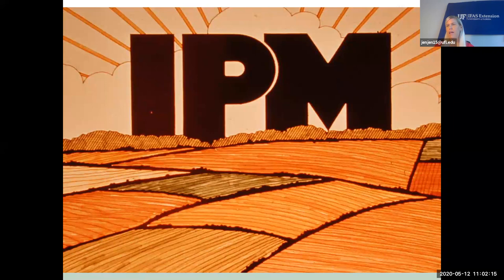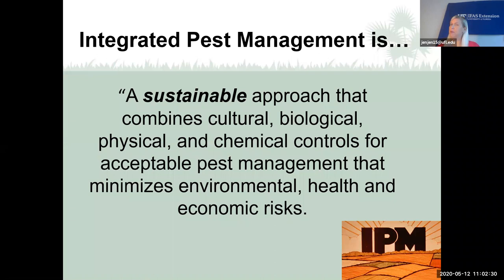When we control pests, we like to practice integrated pest management, or IPM for short. Integrated pest management is a sustainable approach that combines cultural, biological, physical, and chemical controls for acceptable pest management that minimizes the environmental, health, and economic risks.